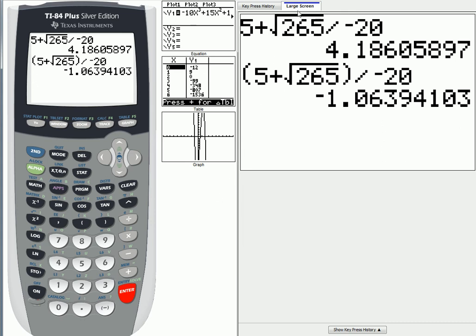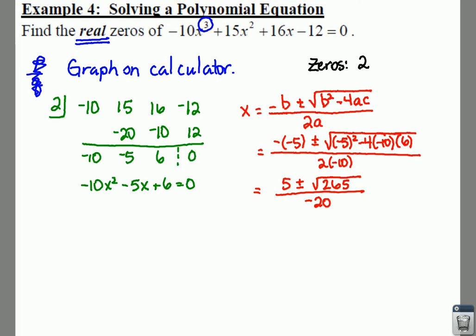Your calculator is just taking the square root of 265 and dividing that by -20. In the second row, it's actually taking the 5 plus the square root of 265 divided by -20. So make sure you are careful when you are plugging your values in. And I noticed this is -1.06, so that is actually one of the zeros that we had when I first found the zero on our graph. So one of our answers is -1.06.